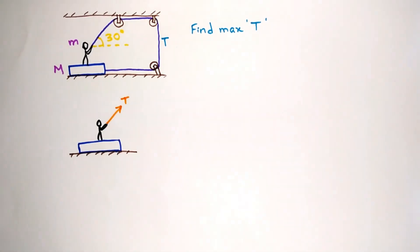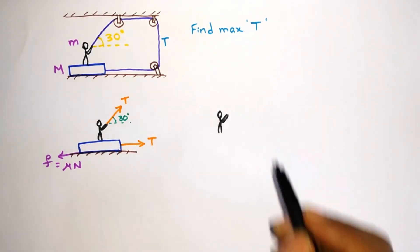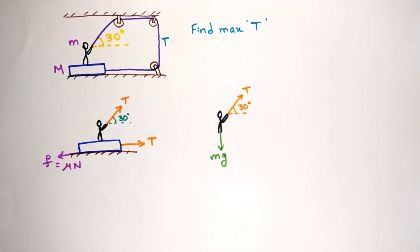Let's write the tension forces acting on the masses. Take the free body diagram of the person and mention all the forces acting on the person. Here the friction force between the person and the block is taken as F1.